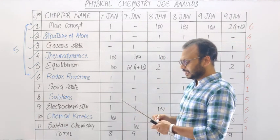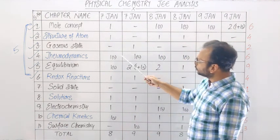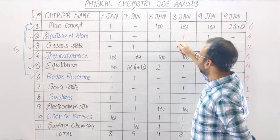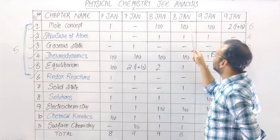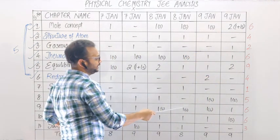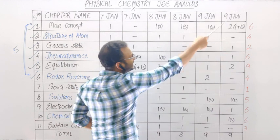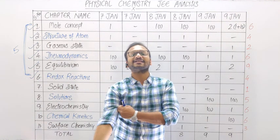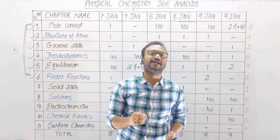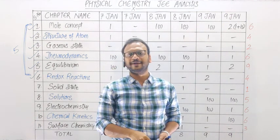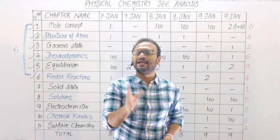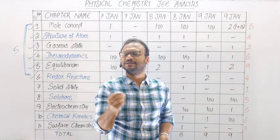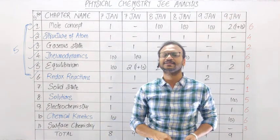Har paper ke andar subjective questions: 7th January morning shift — 1, 2, 3; 7th January evening shift — 1, 2, 3; 8th January morning shift — 1, 2, 3; 8th January evening shift — 1, 2, 3; 9th January morning shift — 1, 2, 3; 9th January evening shift — 1, 2, 3. Yani jo 5 numerical type ke problems is saal se JEE Mains mein add hue hain, un 5 mein se teen numerical fix physical chemistry ke honge. Ek organic se aayega aur ek inorganic se — ya ho sakta hai organic se koi numerical na aaye, 2 inorganic se ho jaayein, aur 3 physical chemistry se. Par physical ke 3 numericals fix hain.